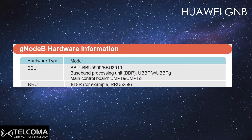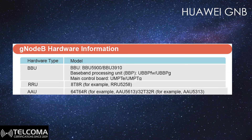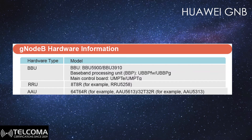Huawei also has RRU solutions usable for 5G, and the AAU solution with 64T64R. One of the key product series is the AAU 5 series used for Huawei 5G. The AAU 5613 is the most common and most advanced one, supporting 64 transmitters and 64 receivers. They also have the 32T32R solution, which is the AAU 5313. So AAU 5613 is for 64T64R and AAU 5313 is for 32T32R — remember these names as they are important when working practically.